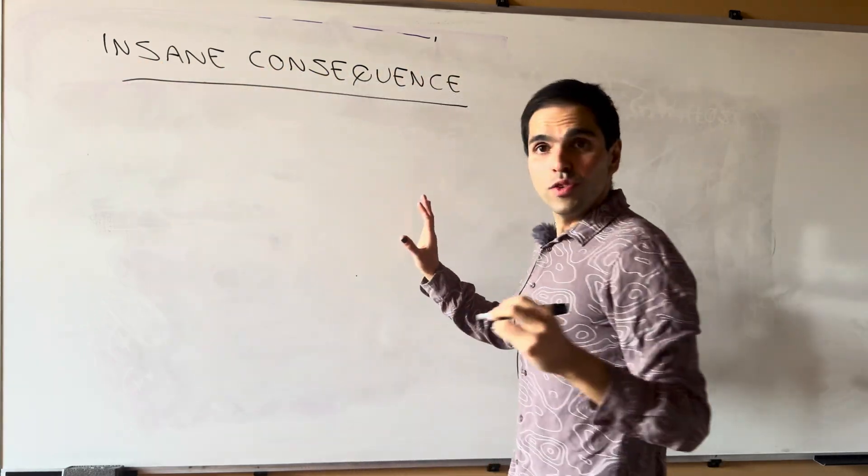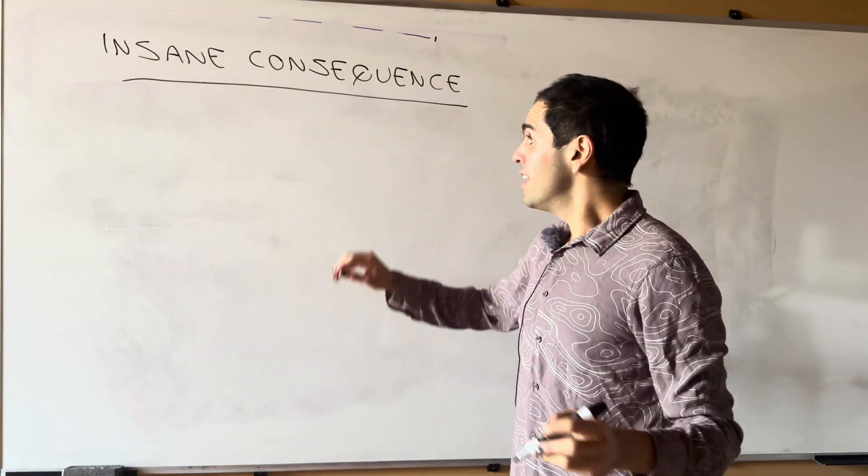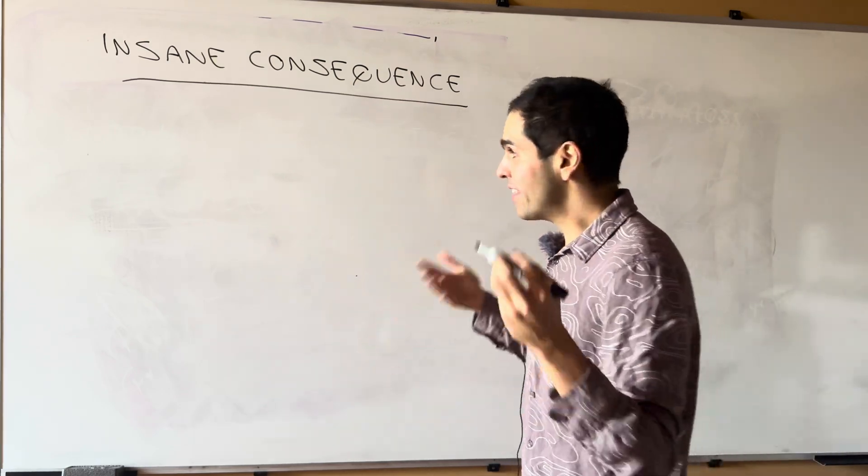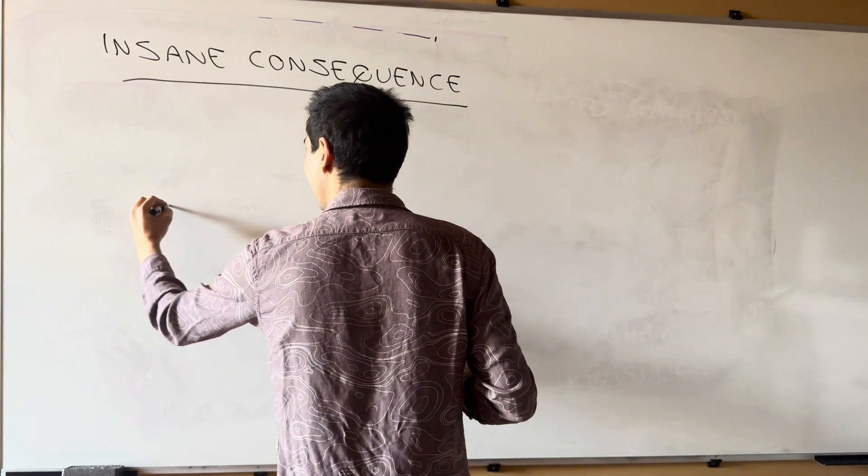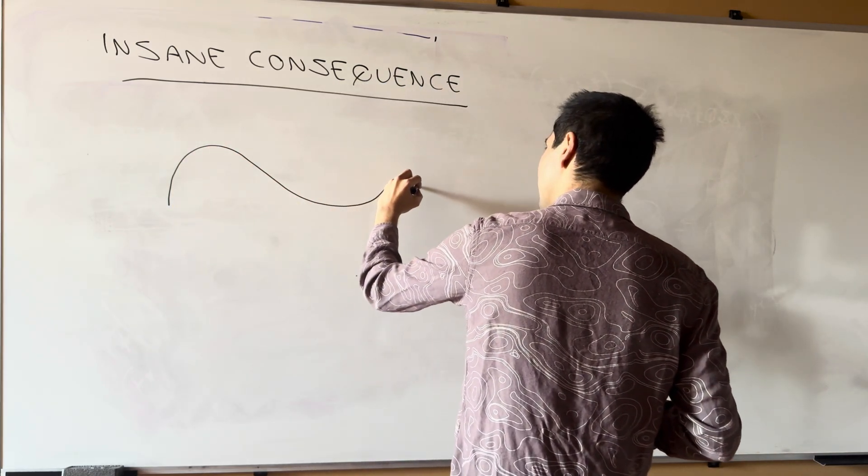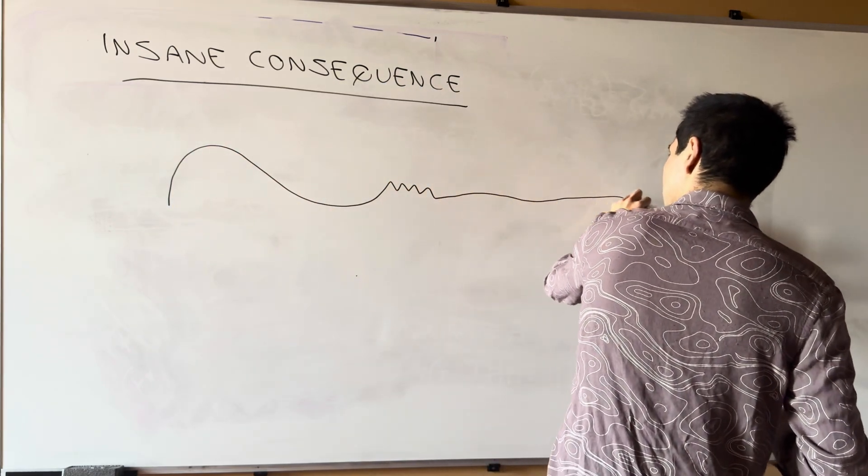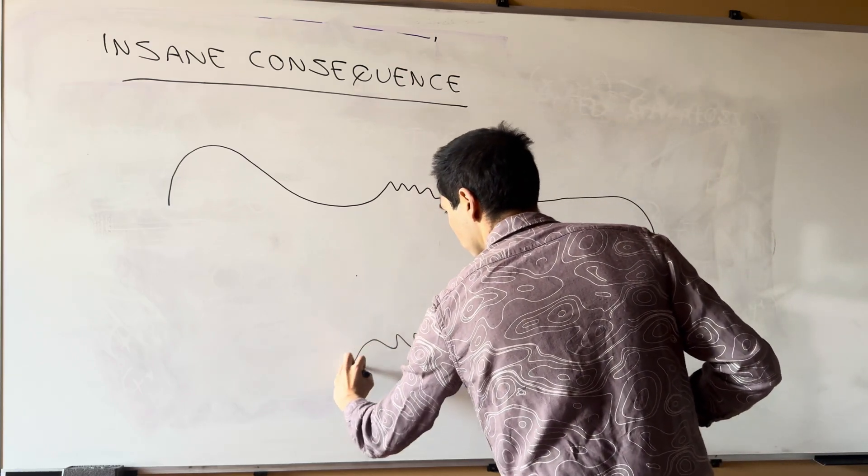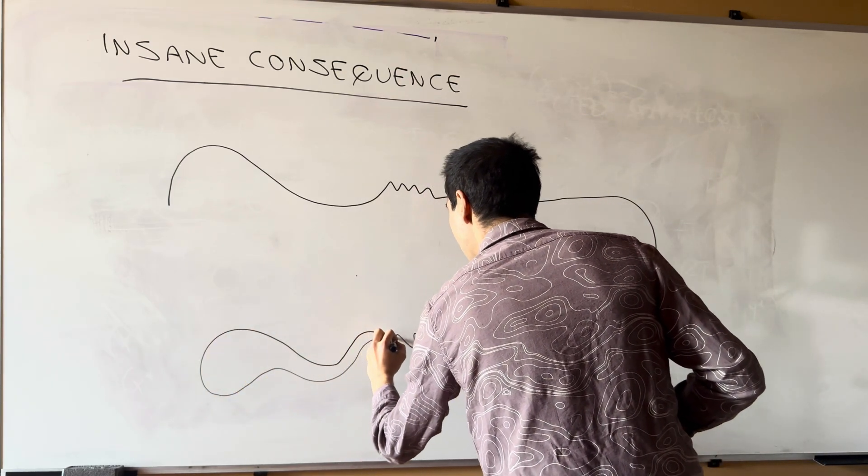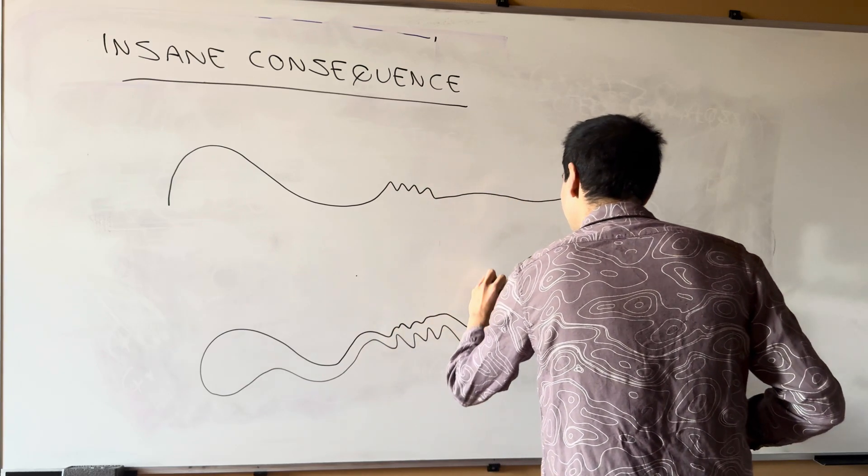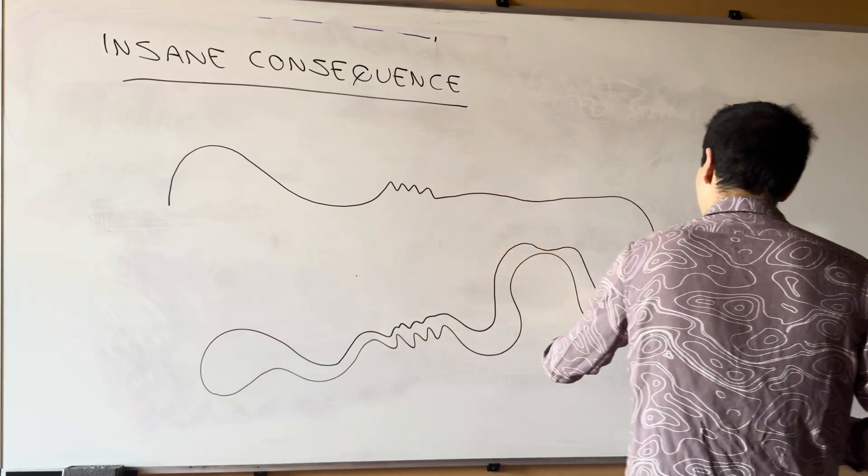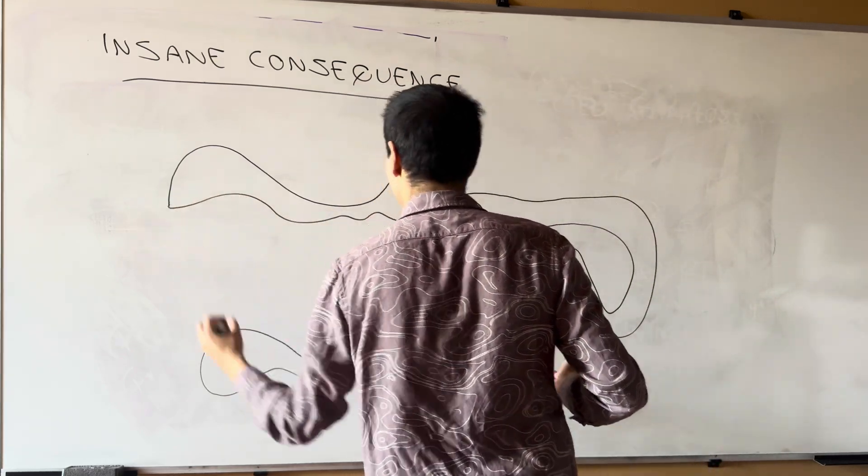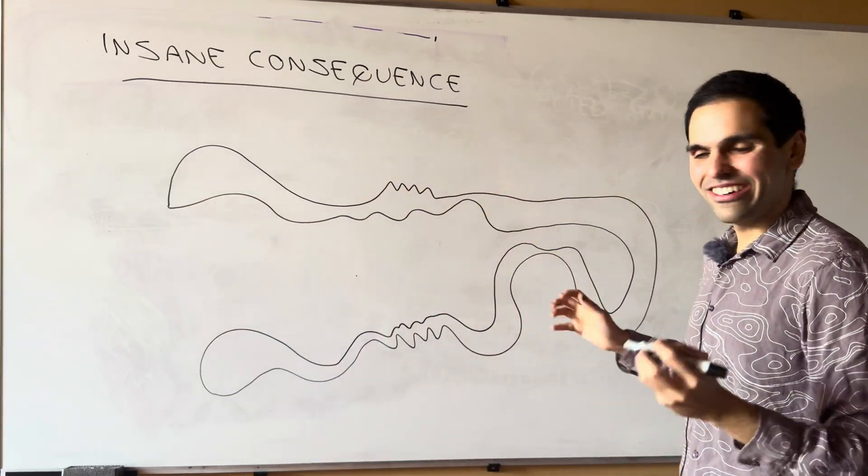So suppose that your region omega is very crazy. Like think almost a fractal region. Like it might look like this here and here a little bit fractally. Maybe it goes like this. Like this. Like this. And let's make this super narrow. This and then here super, super narrow. Maybe here. Almost looks like an alligator if you want.